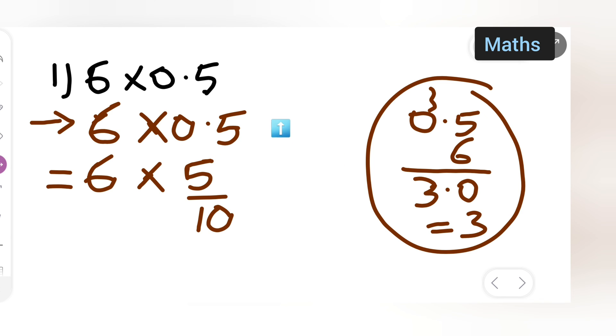I have removed the decimal point from the first position, so 10 will come. So basically, 6 times 5 gives you 6 multiplied by 5 upon 1 multiplied by 10.